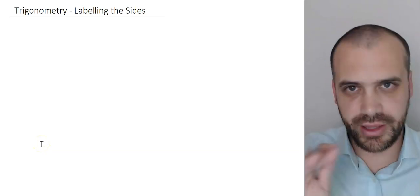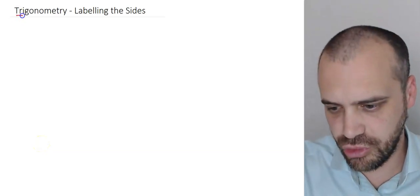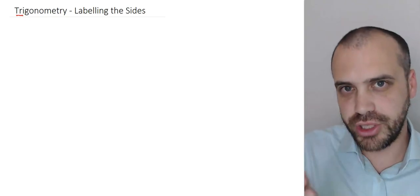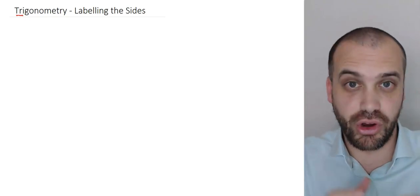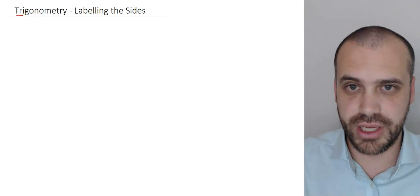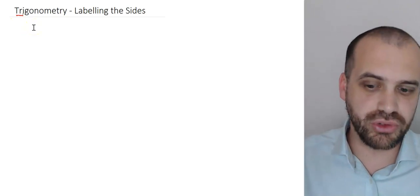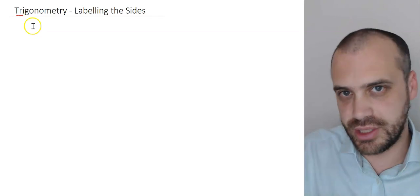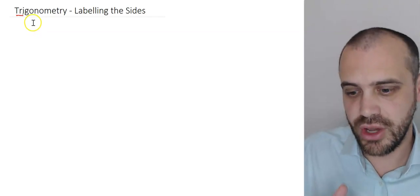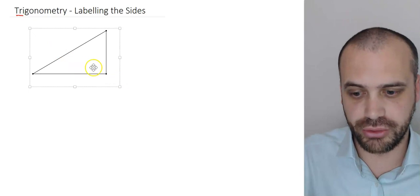Talking about trigonometry — the hint is in the name: 'tri,' like a tricycle with three wheels. Trigonometry is the study of triangles because they have three sides. You can use trigonometry for all sorts of triangles, but we're going to be limiting these next few videos to triangles that are right angle triangles.